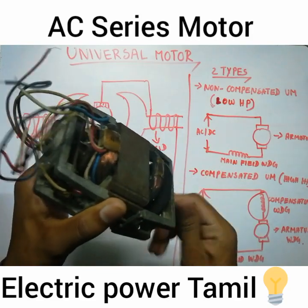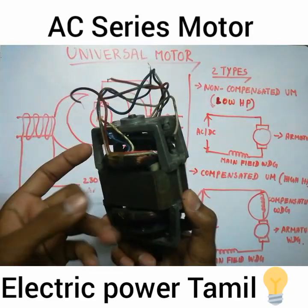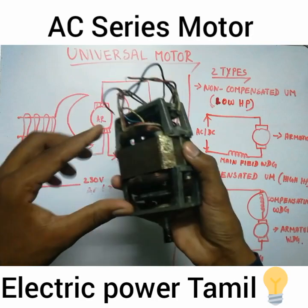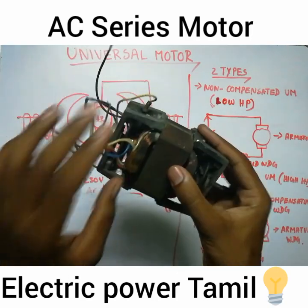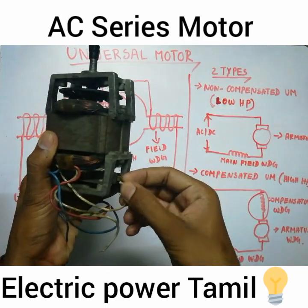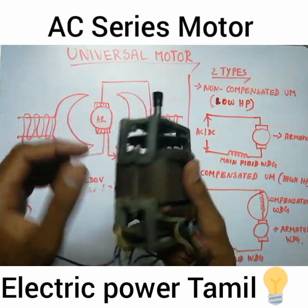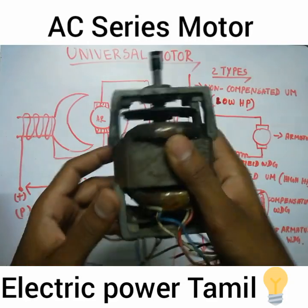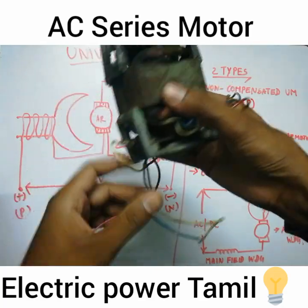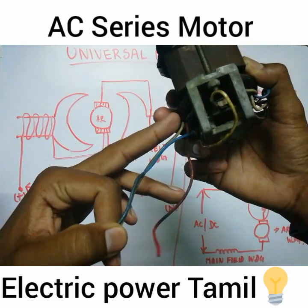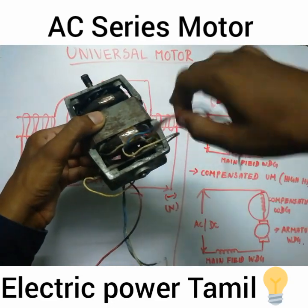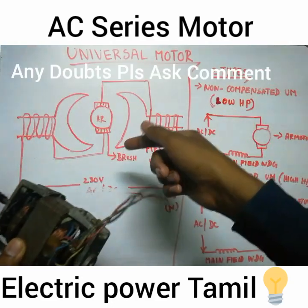This is a universal motor — I already filmed this video. This is a mixing motor. This is the field winding, this is the inner end, this is the pole, and this is the other pole. This is the commutator, this is the carbon brush, and this is the armature — the inner armature. One side of the entry is a pole, and the brush connects to the armature return.